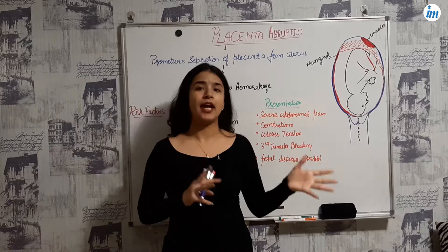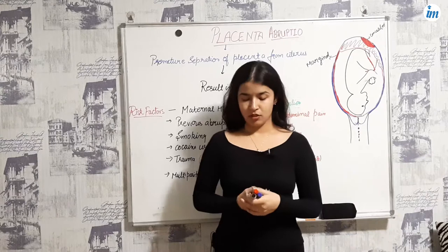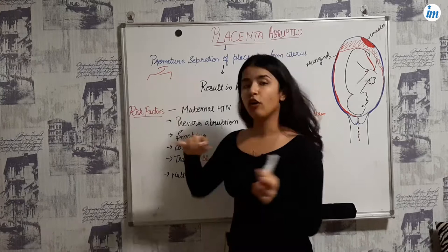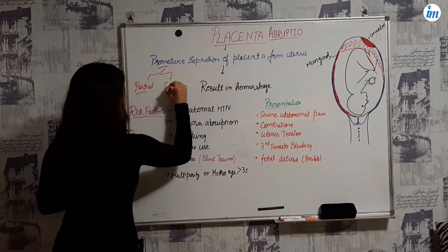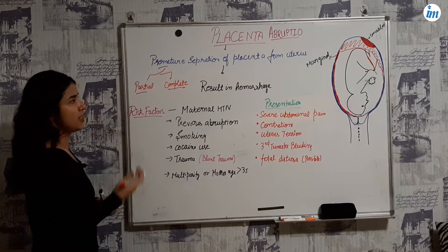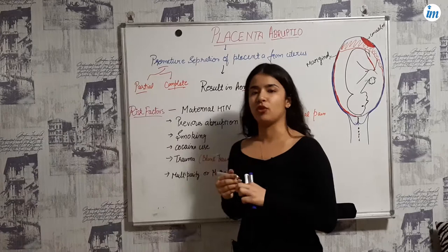Now this separation can be partial or it can be complete. So depending on the extent, it can be a partial separation or a complete separation of the placenta from the uterus, which results in hemorrhage.